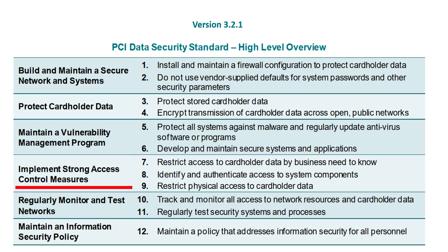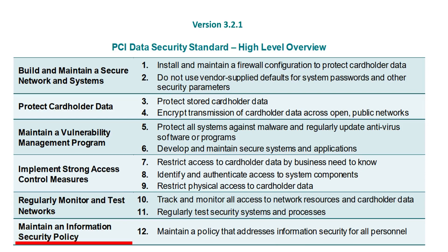Domain 4: Implement Strong Access Control Measures. Within Domain 4 we have Requirement 7: Restrict access to cardholder data by business need to know; Requirement 8: Identify and authenticate access to system components; Requirement 9: Restrict physical access to cardholder data. Domain 5: Regularly Monitor and Test Networks. Within Domain 5 we have Requirement 10: Track and monitor all access to network resources and cardholder data, and Requirement 11: Regularly test security systems and processes.